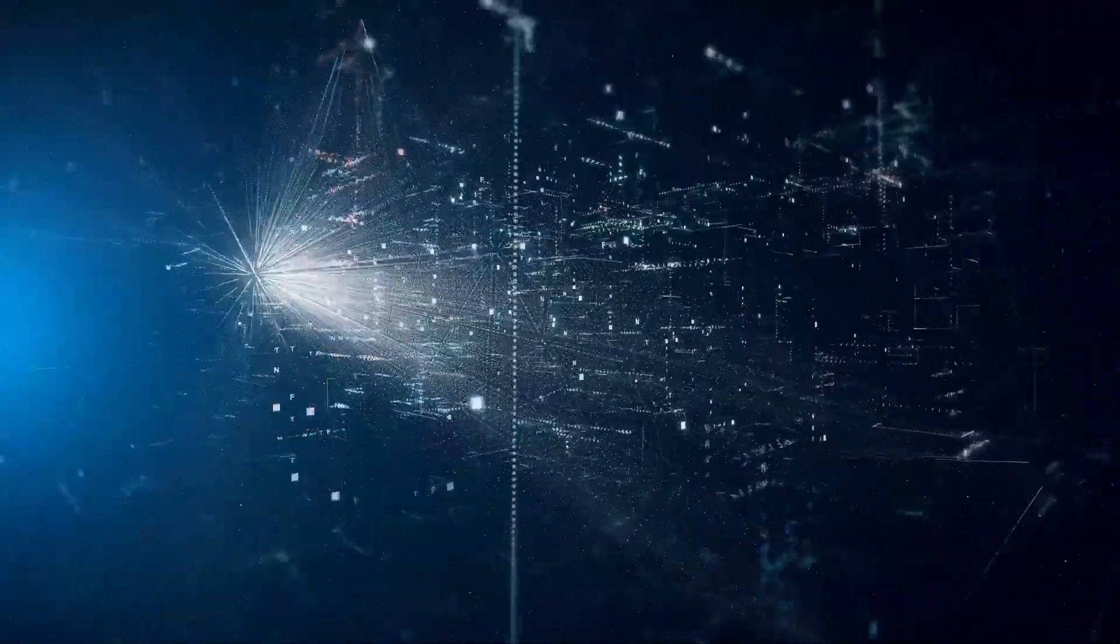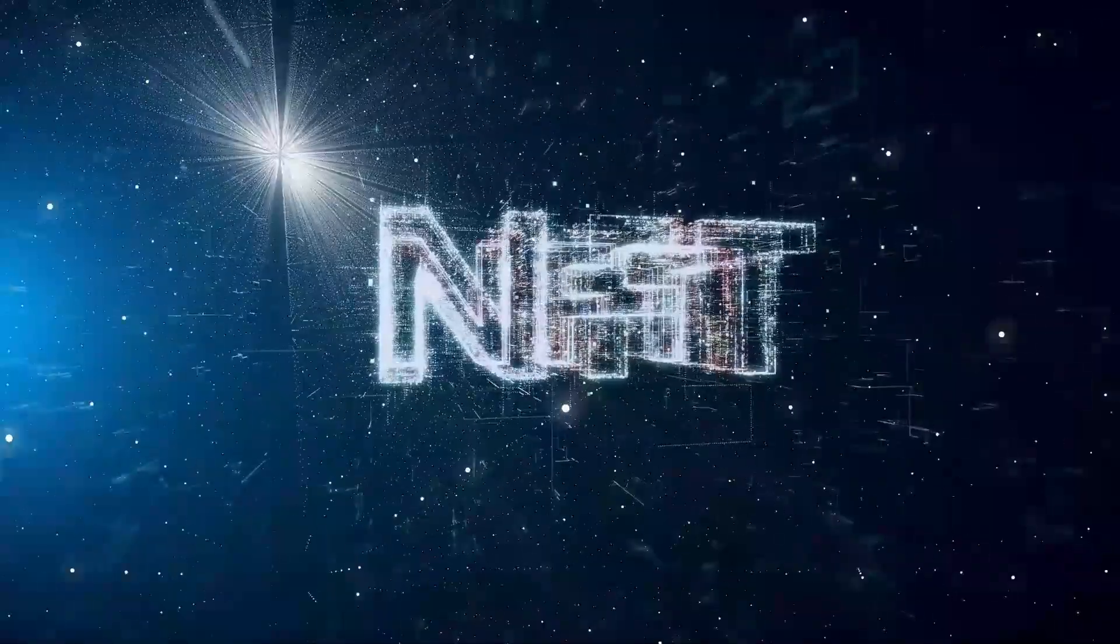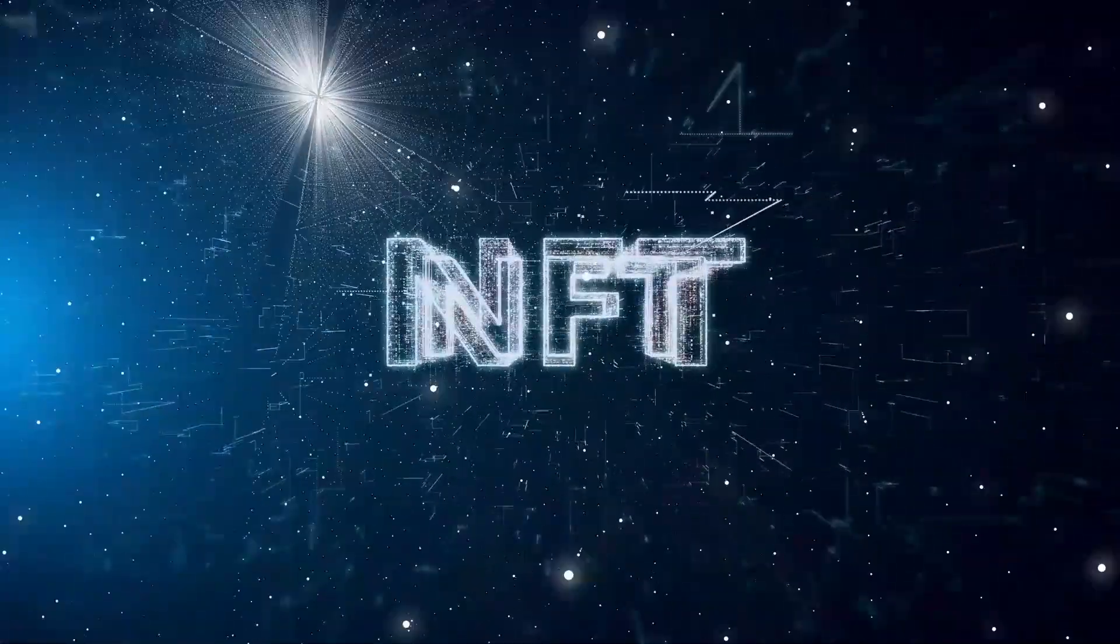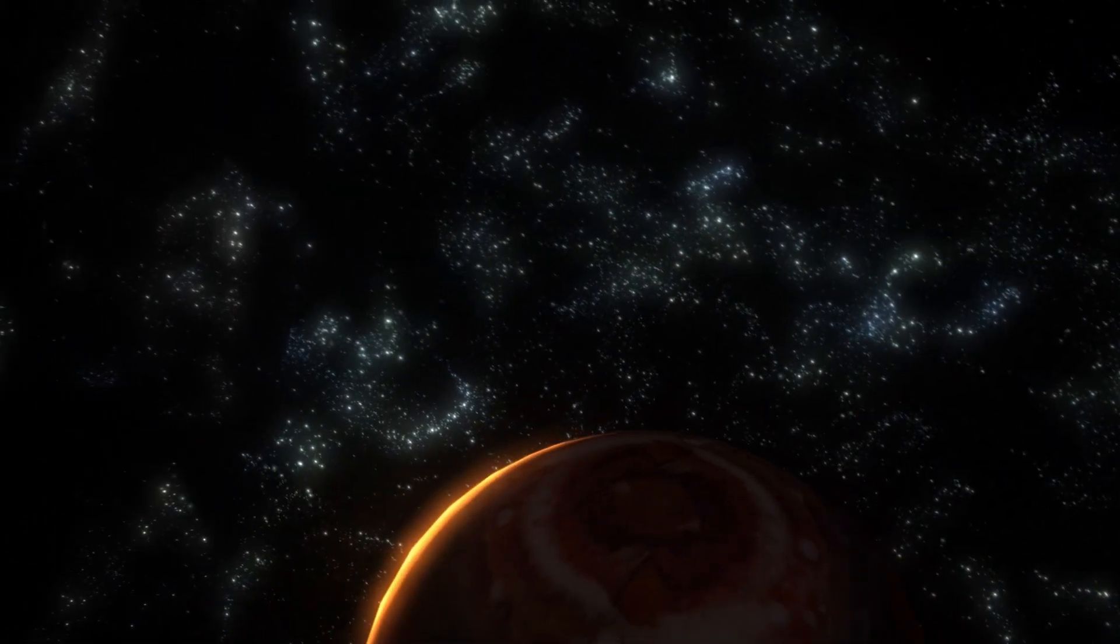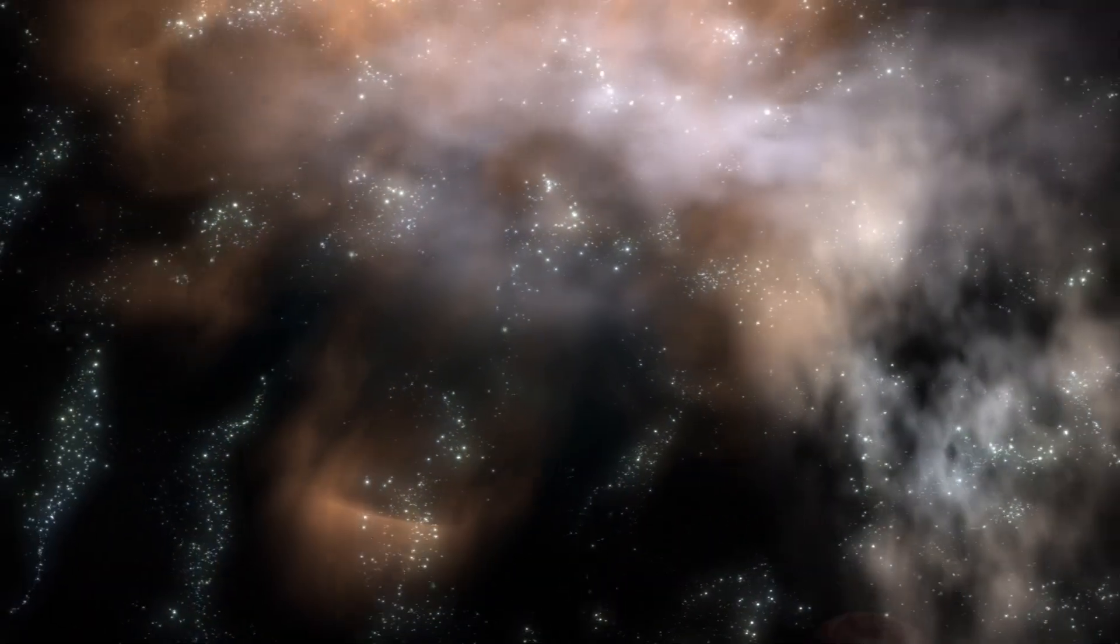A Chinese telescope just captured the clearest image yet of 3I Atlas, an object racing through our solar system from another star. But while the world sees a blur of light, some are asking, why is NASA so quiet? What's in this image that space agencies aren't talking about?